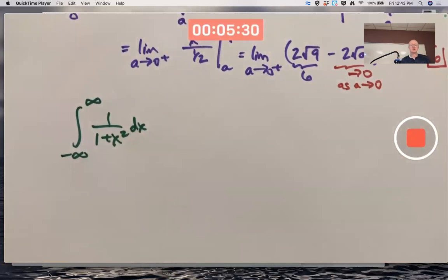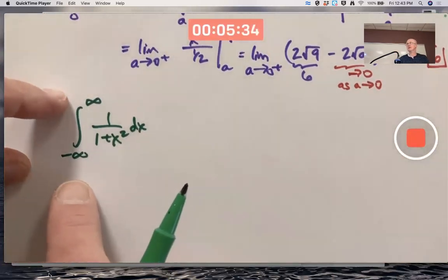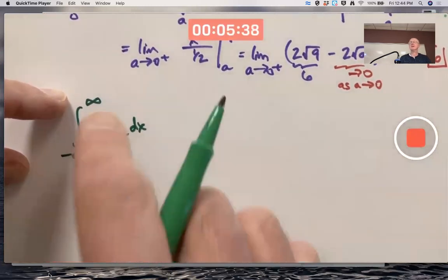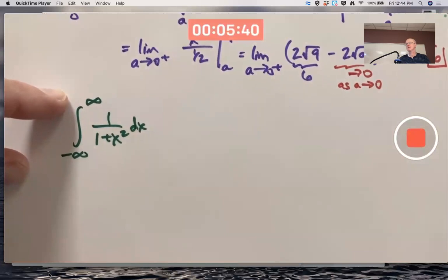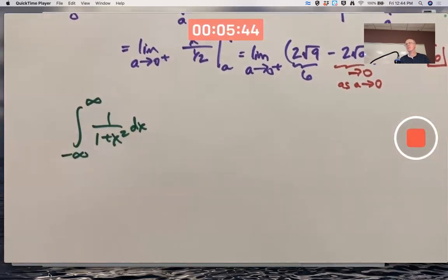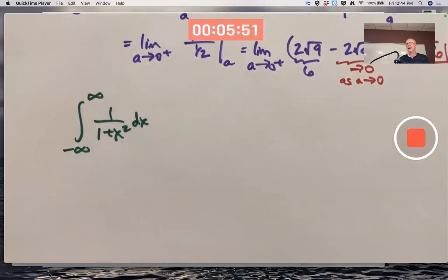Now, there's a temptation here to write this as a limit as b goes to infinity of the integral from negative b to b. And that does get you the right answer for problems where the improper integral does converge, where it behaves in a robust way. However, that approach can be misleading, it turns out, for some other kinds of examples.